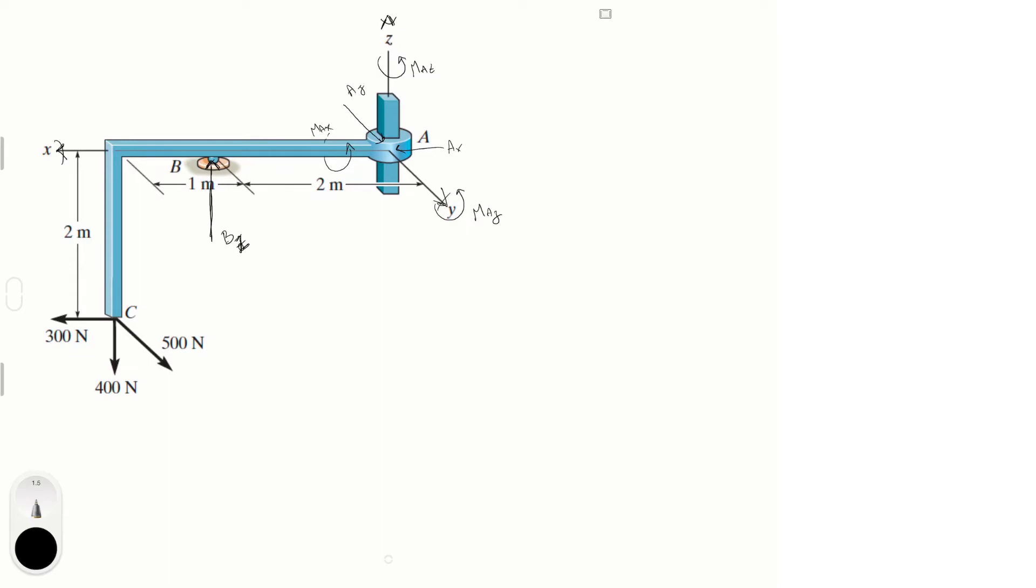Now that we have our free body diagram, let's do some math and find this. First thing we're going to do is find the sum of the forces in the X, Y, and Z. Sum of the forces in the X is equal to zero: AX plus 300 equals zero, so AX equals negative 300 newtons.